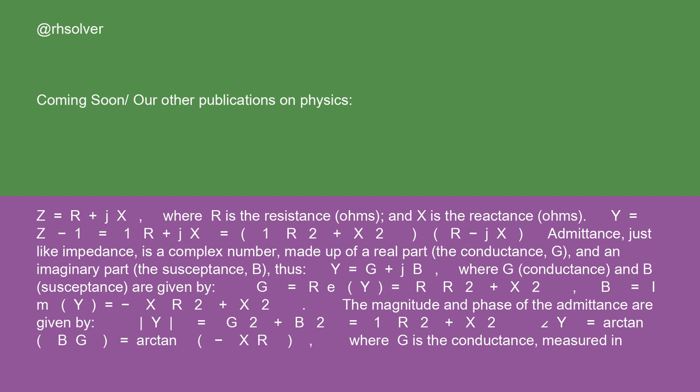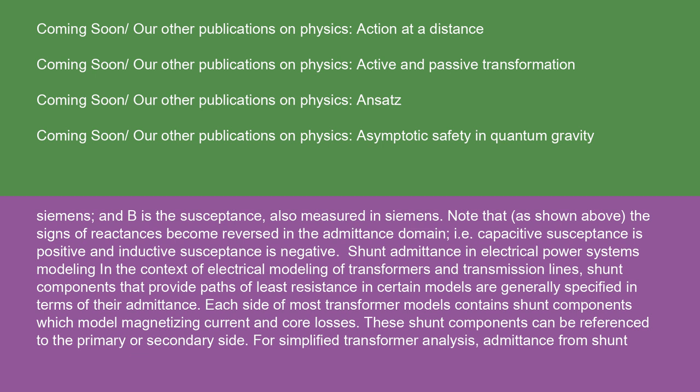Where G is the conductance measured in Siemens, and B is the susceptance, also measured in Siemens.